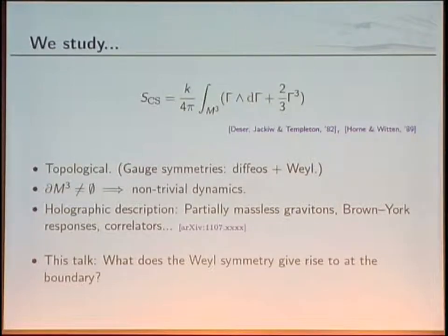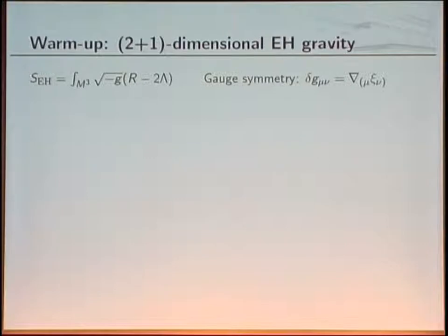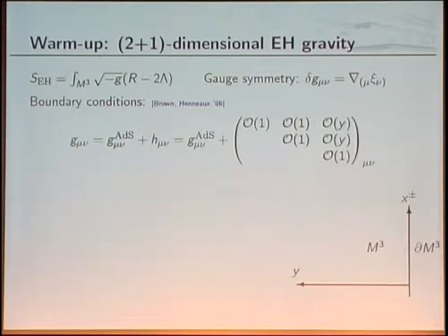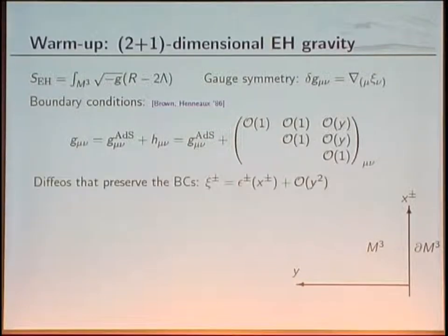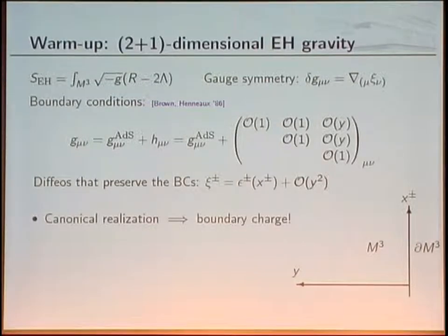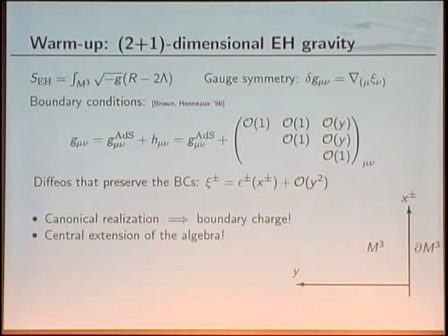I will focus on what the Weyl symmetry turns into when a boundary is taken into account. As a warm-up, in 2+1 dimensional Einstein-Hilbert gravity on asymptotically AdS space, putting the theory on an asymptotic AdS boundary and imposing boundary conditions means diffeomorphisms must respect those boundary conditions. Some diffeomorphisms do not vanish at the boundary and require a boundary piece in the canonical realization — so a gauge symmetry turns into a global symmetry. For Einstein-Hilbert gravity this is two copies of Virasoro.